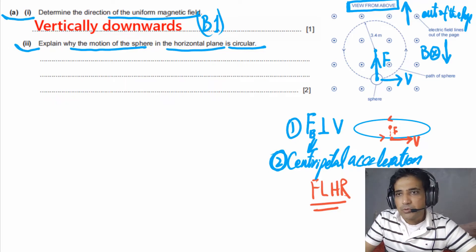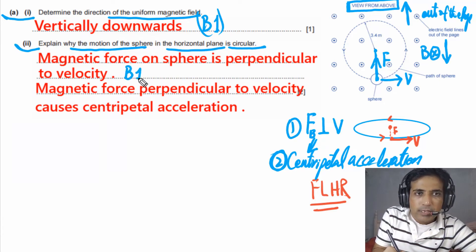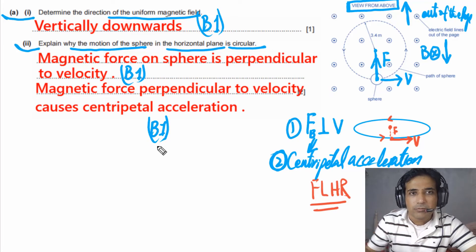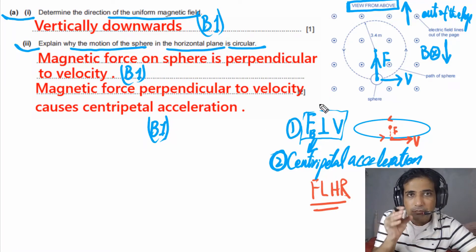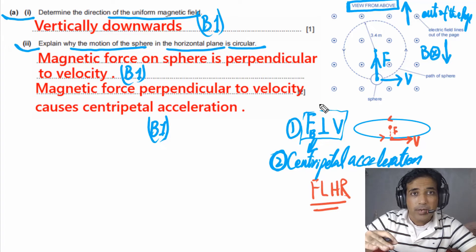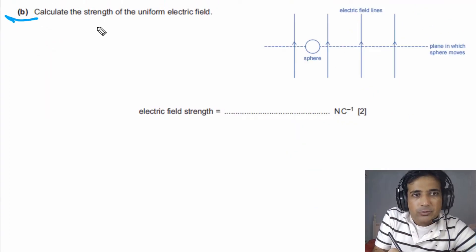This is how you write the answer for part a2 — you mention both points. The first mark is awarded for stating that the force is perpendicular to the velocity, and the second mark for explaining that this causes centripetal acceleration and therefore circular motion. When there is a component of resultant force perpendicular to the velocity, that component causes centripetal acceleration and the particle undergoes circular motion.